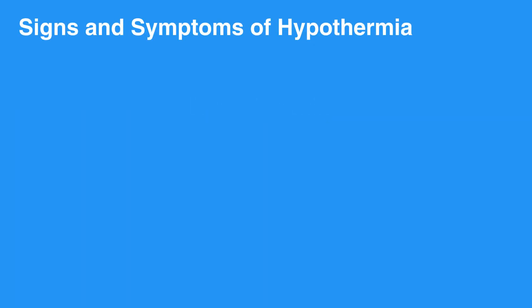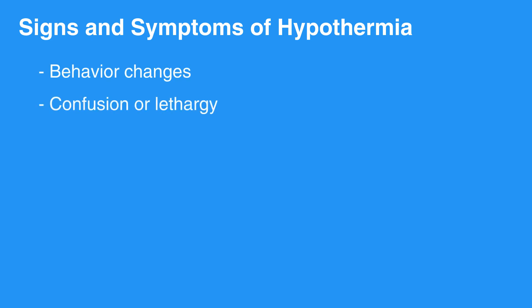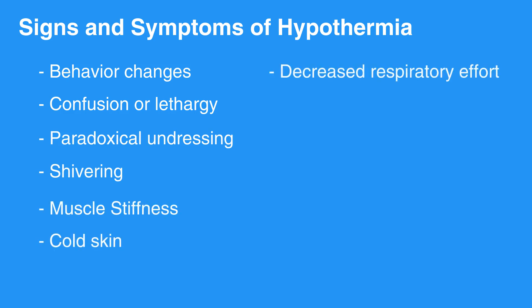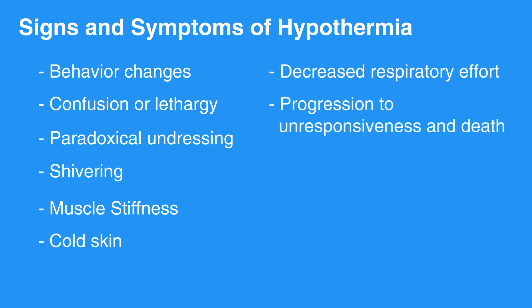Signs and symptoms consist of behavior change, confusion or lethargy, paradoxical undressing, shivering that stops as hypothermia worsens, muscle stiffness, cold skin, decreased respiratory effort, and progression to unresponsiveness and death.